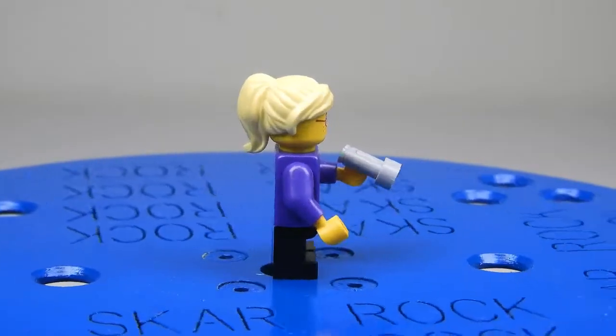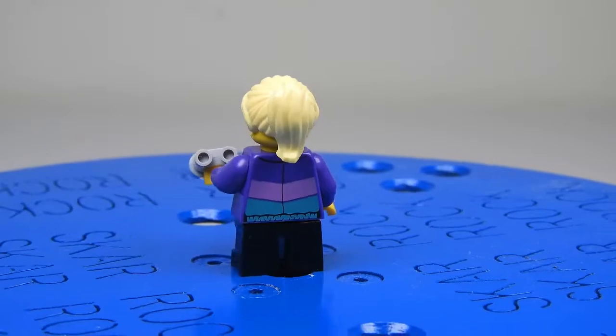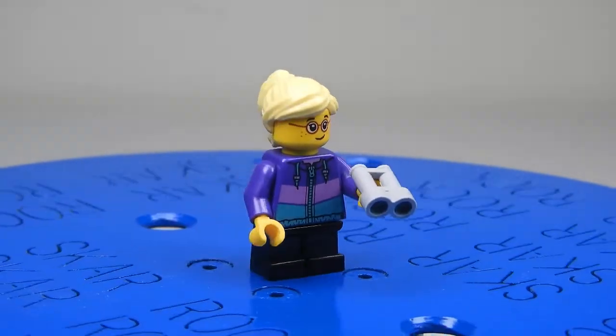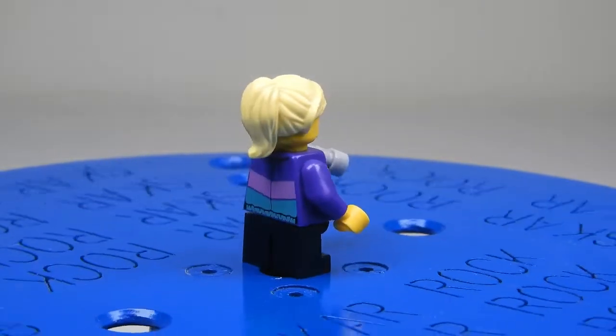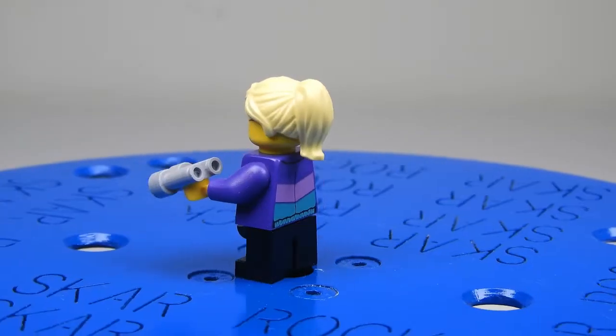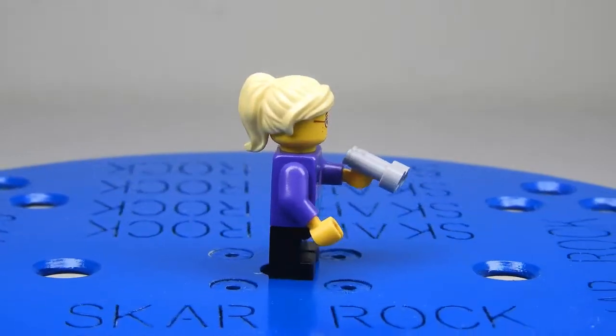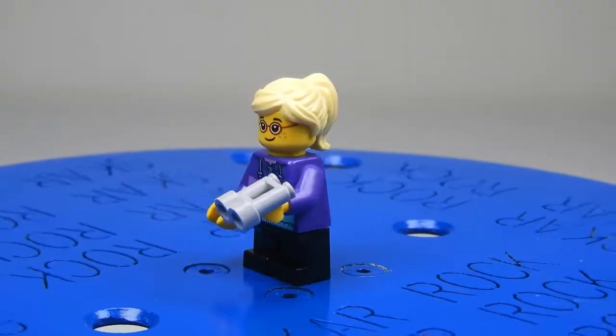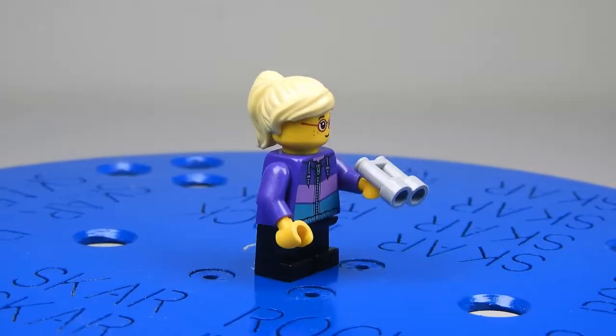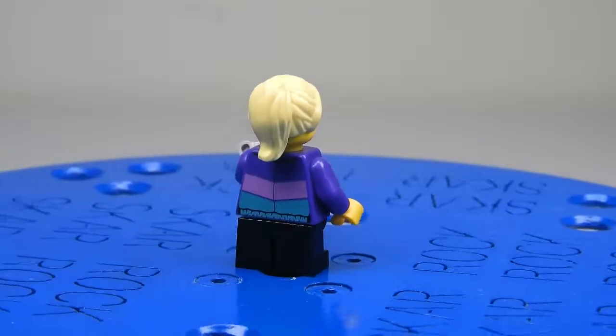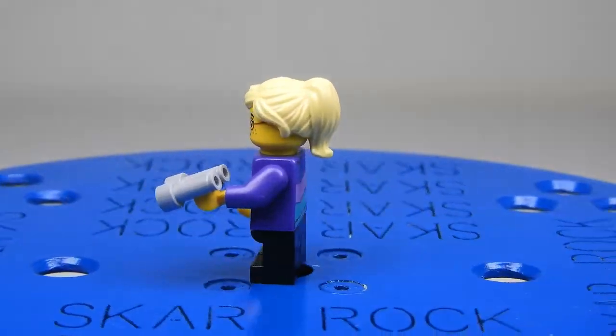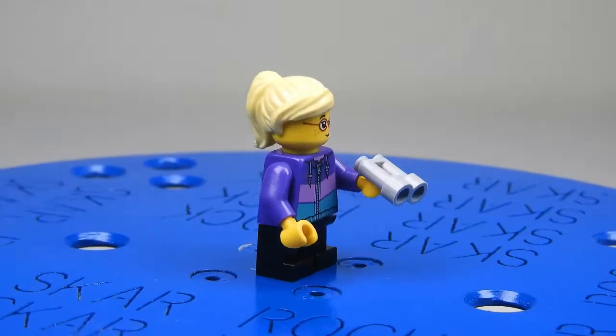Here we have another girl who has very light blonde hair in that hair piece. She has red glasses with freckles on her face. She has brown binoculars and small black leg pieces. She also has a purple top with a pink stripe and a turquoise stripe and a zip down the middle.